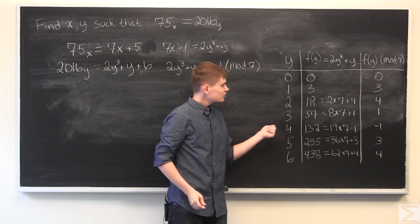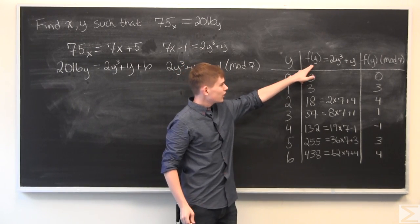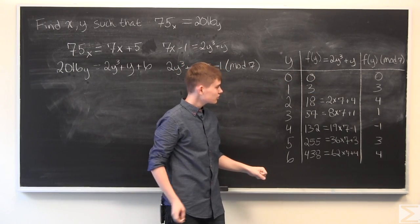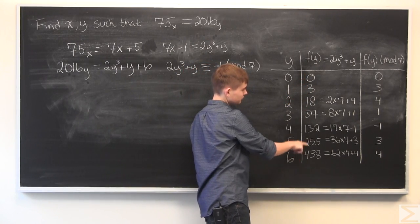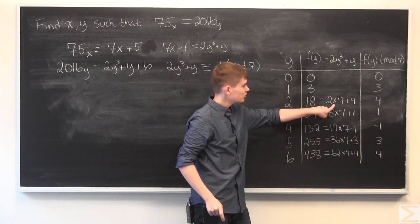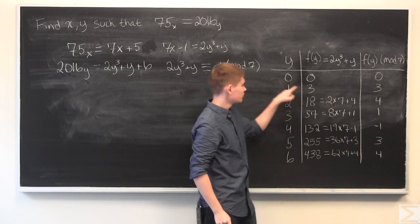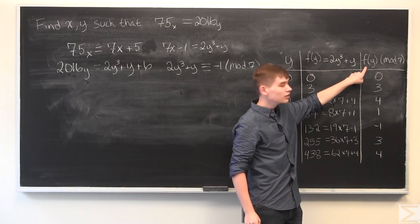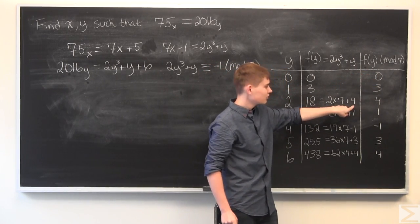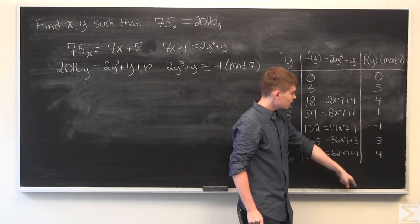Alright, so this is the residue class of f of y. And so, what this table shows is this is f of y and then we break it up into a multiple of 7 plus an integer between 0 and 6. And so, f of y mod 7 will just be that integer. And we get this.